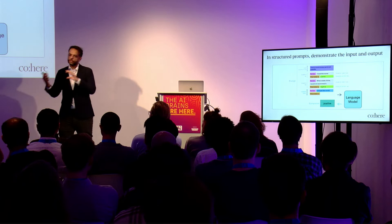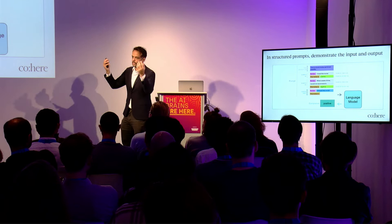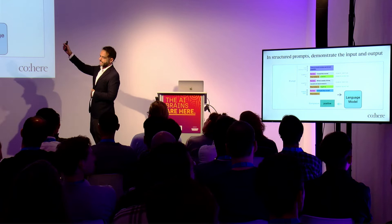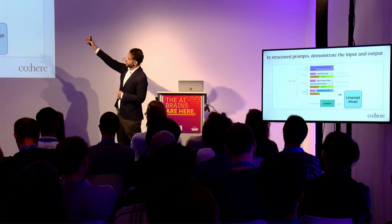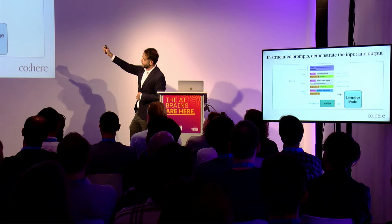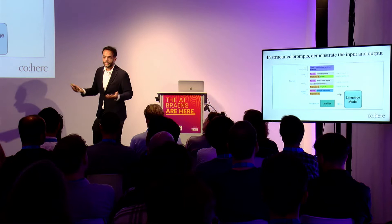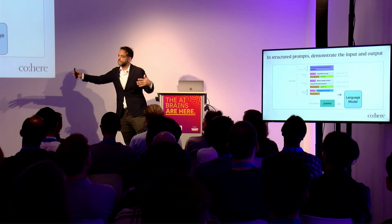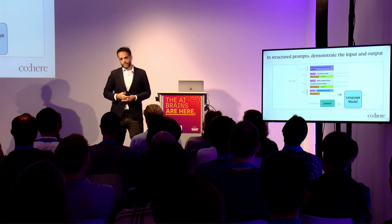You can also do structured prompts where each example is an input and output on its own — not just free-flowing 'talk like Shakespeare,' but making it a classifier. For example, a sentiment classifier: I give you one short review and show you the sentiment is positive, another review and show you the sentiment is negative, so you understand these are the two classes. Then I give you a third example and have you complete the classification. This is what's called few-shot learning.